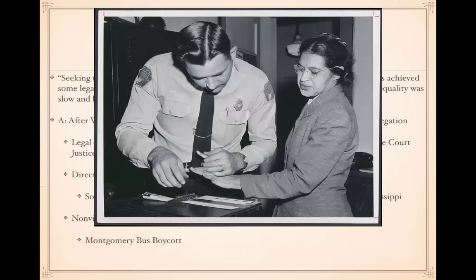Non-violent protest tactics were used by people like Martin Luther King Jr. in the Montgomery Bus Boycott — here's Rosa Parks the day she was arrested. Sit-ins began in Greensboro, North Carolina and inspired other sit-ins across the country, as well as bowl-ins, wade-ins, and kneel-ins at churches. There were demonstrations all across the country trying to end segregation.